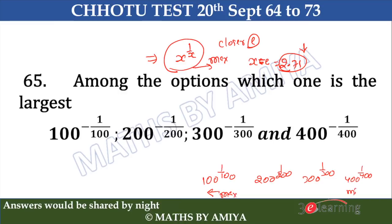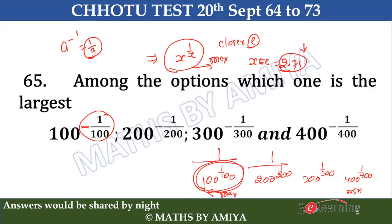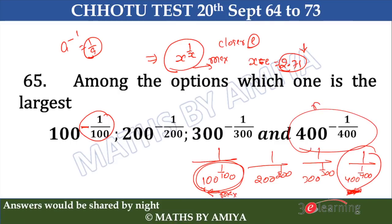But we have a minus sign in the power. When we have A raised to power minus 1, that is 1/A. We know if one value is maximum and we reverse it, we get the reverse answer. So the minimum value of x^(1/x), which is 4 raised to power 1/4, becomes the maximum when negated. The answer is option D: 400 raised to power minus 1/400.